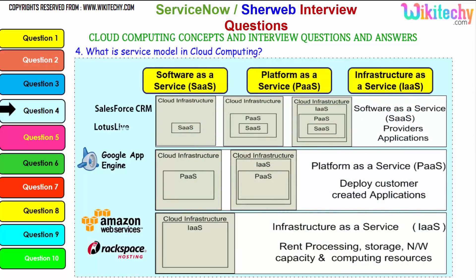With Software as a Service, the cloud infrastructure, software, operating system, and infrastructure are all managed for you. With Platform as a Service, you get the platform OS placed on a server, and you can put any application or software you want. With Infrastructure as a Service, a server is given to you and you can install whatever OS and application you want, whereas with SaaS only changes in the application are allowed. Examples: SaaS includes Lotus Live and Salesforce CRM; PaaS includes Windows Azure and Google App Engine; IaaS includes Amazon Web Services and Rackspace Hosting.